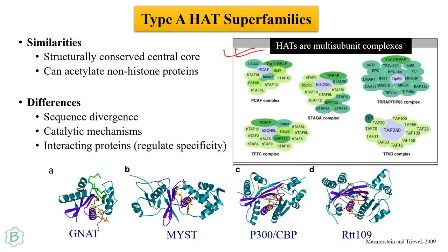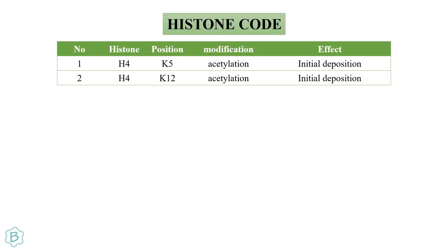Type A HATs remain in multi-subunit complexes. These proteins are structurally conserved in the central core and can acetylate non-histone proteins. Differences include sequence divergence, catalytic mechanisms, and interacting proteins that regulate their specificity. Building a histone code list: histone H4 acetylated at K5 and K12 affects the initial deposition of the histone.